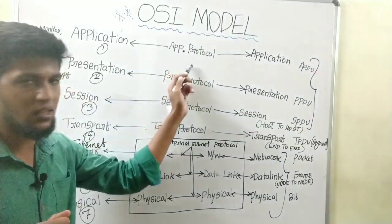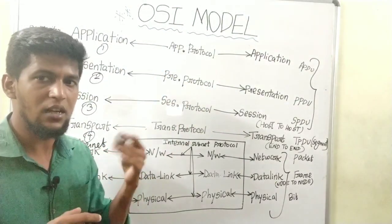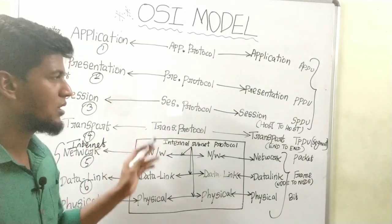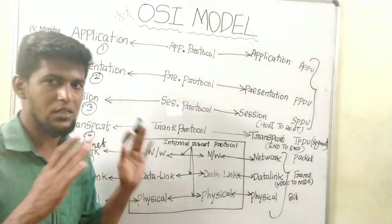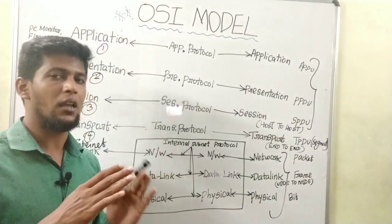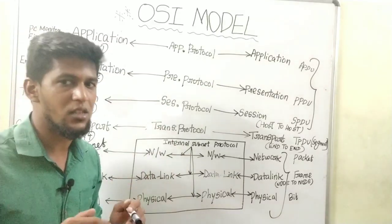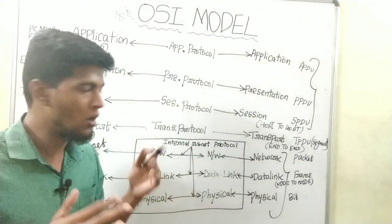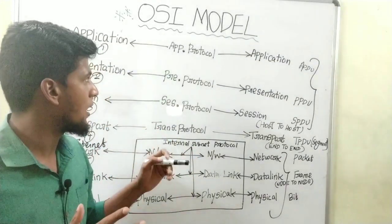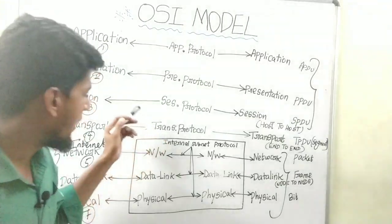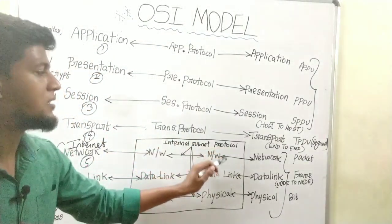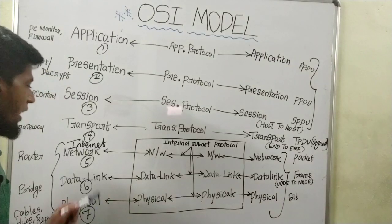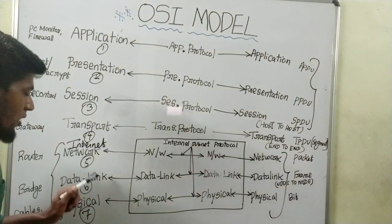If we use the protocols, we can see certain rules and regulations. We can see what the information is about. Here is a subnet protocol — this is a network layer.